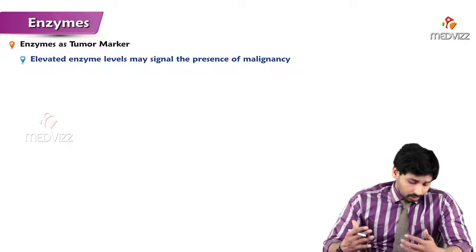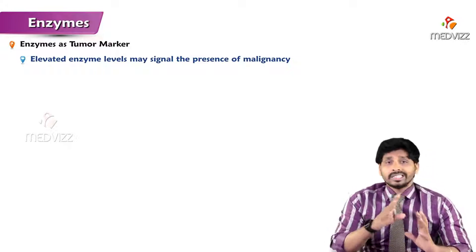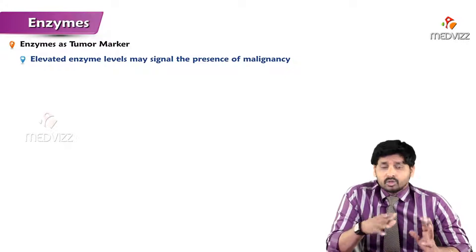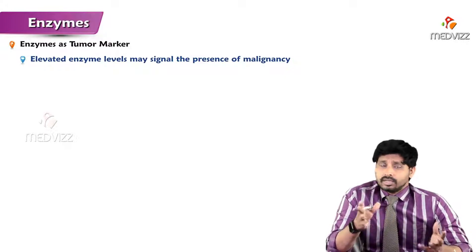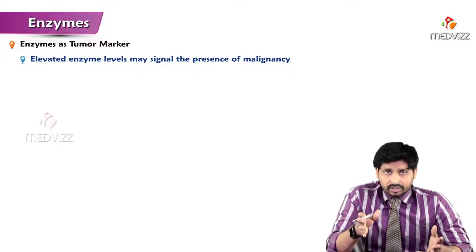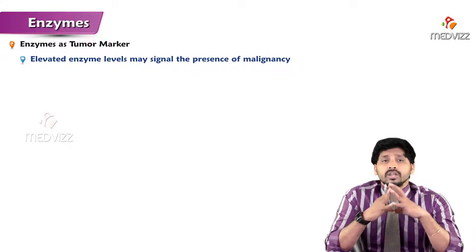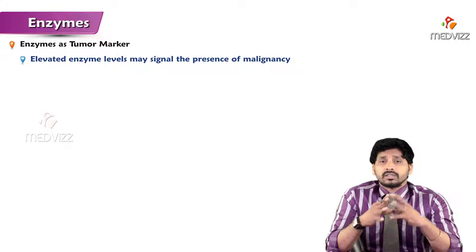First we will talk about enzymes which are acting as tumor markers. Tumor markers means enzymes associated with cancerous conditions. The identification of these enzymes in higher concentration reveals that that particular tissue is under a cancerous condition.